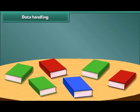Friends, now let's count and arrange these books in the bookshelf. How many red colored books are there? 1 and 2. There are 2 red books. And how many blue books are there? Let's count. 1. There is only 1 blue book.